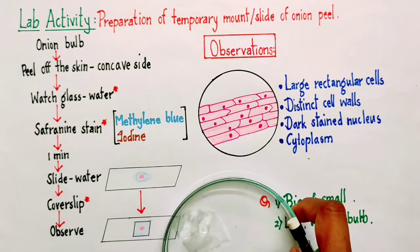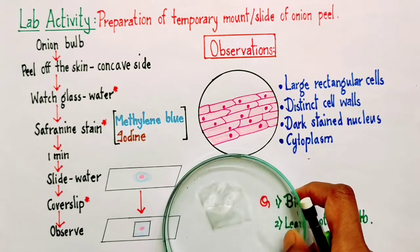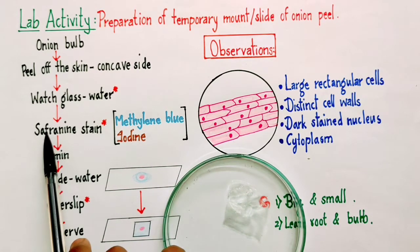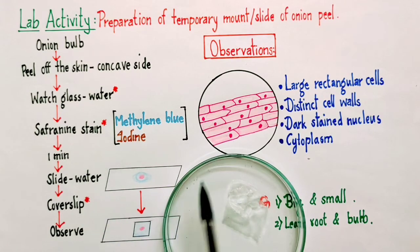That's the reason we have to immediately transfer this peel into a watch glass containing water. I didn't have the watch glass, so I have transferred it into a petri dish containing some water. Now the next step is we need to add a drop of safranin stain into this. Now why we need to add the stain?